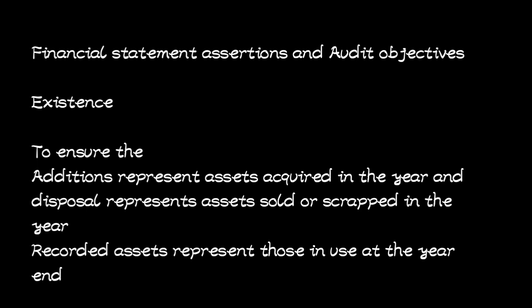Let's look at the financial statement assertions and audit objectives. The first one is existence. The objective is to ensure that all the assets recorded in the statement of financial position actually exist. If it was recorded that a tractor was acquired during the year, you make sure that tractor is physically present in the organization. If it was recorded that a particular piece of land was sold, you confirm whether that land was actually sold by looking at the agreement of sale.